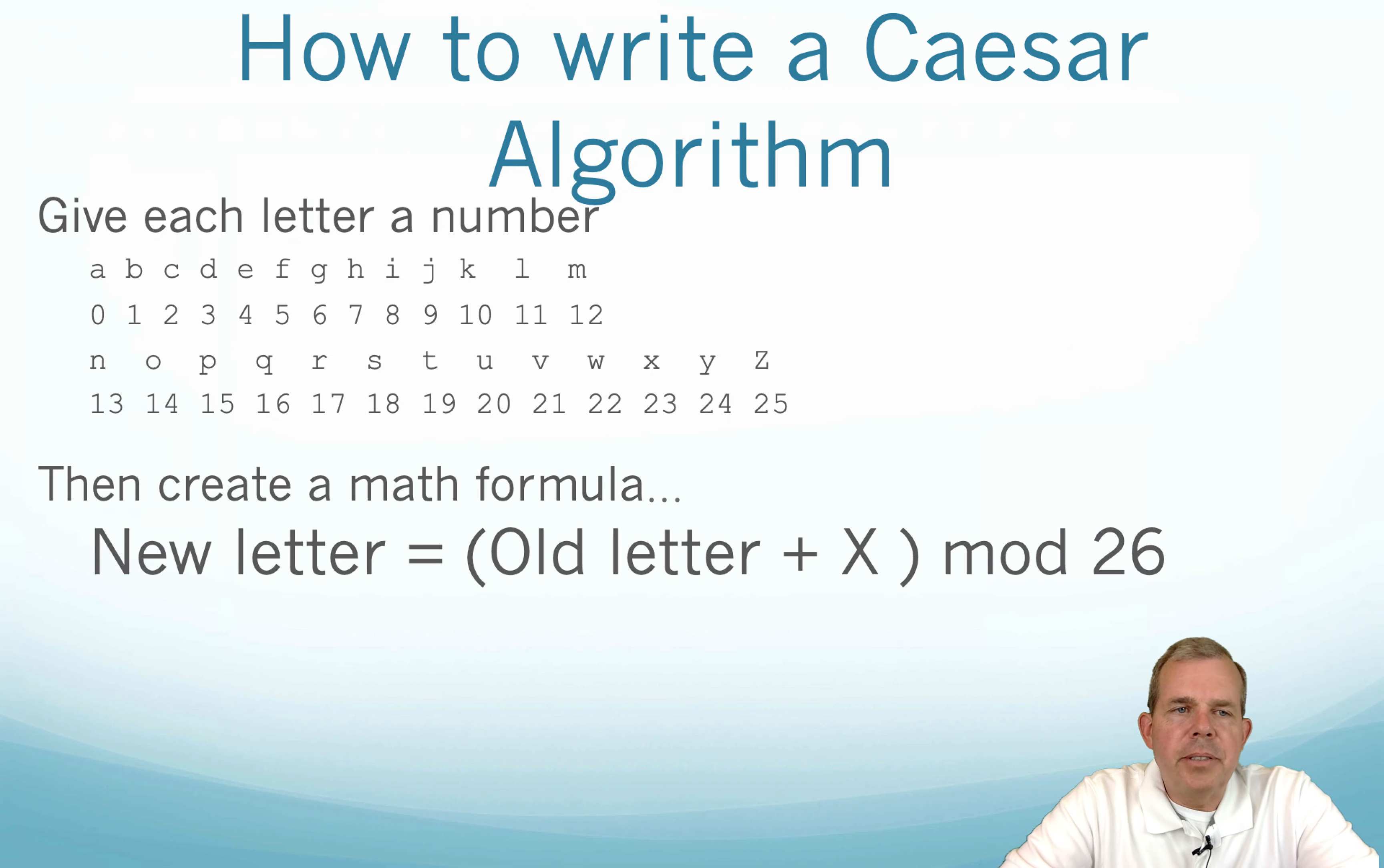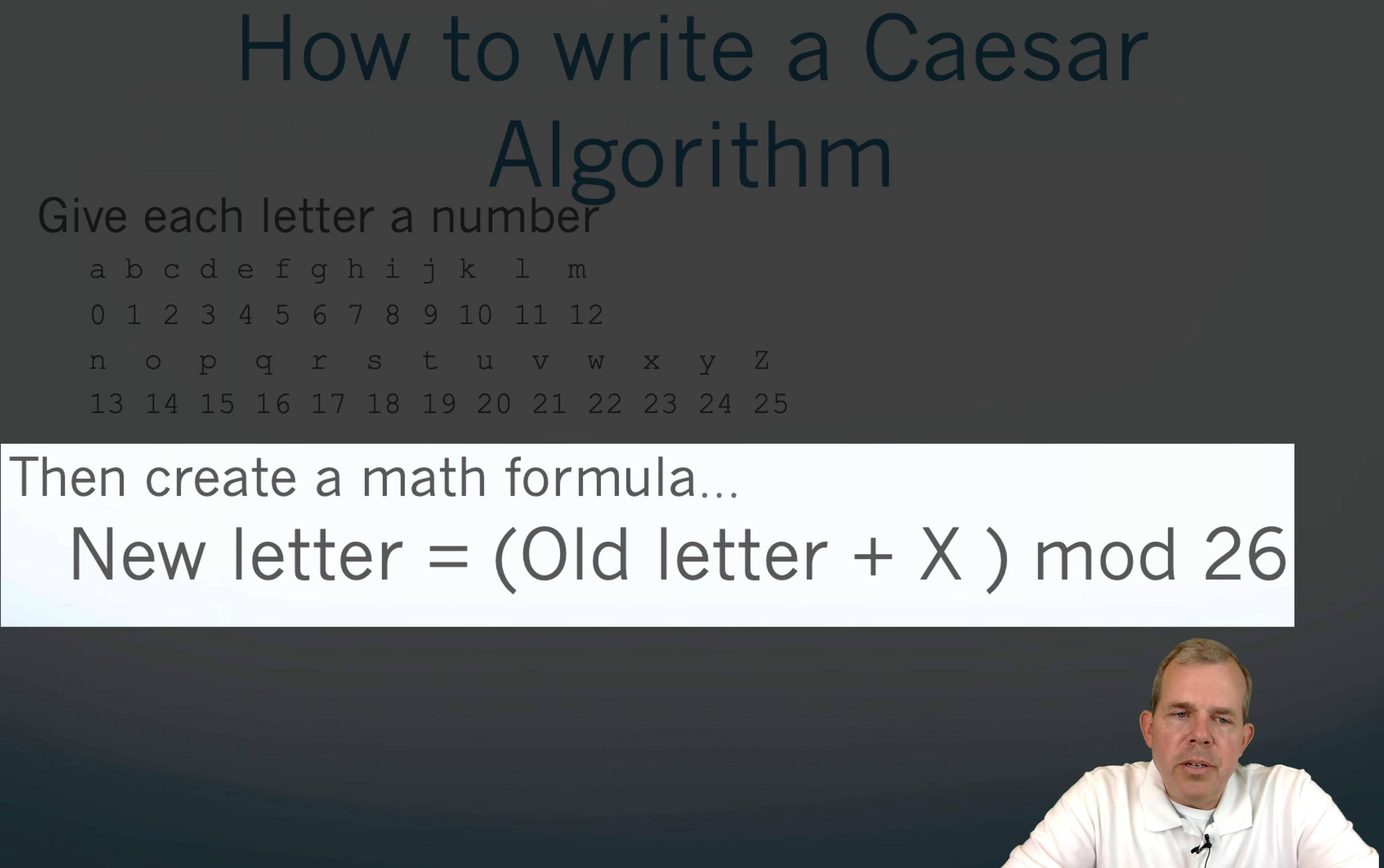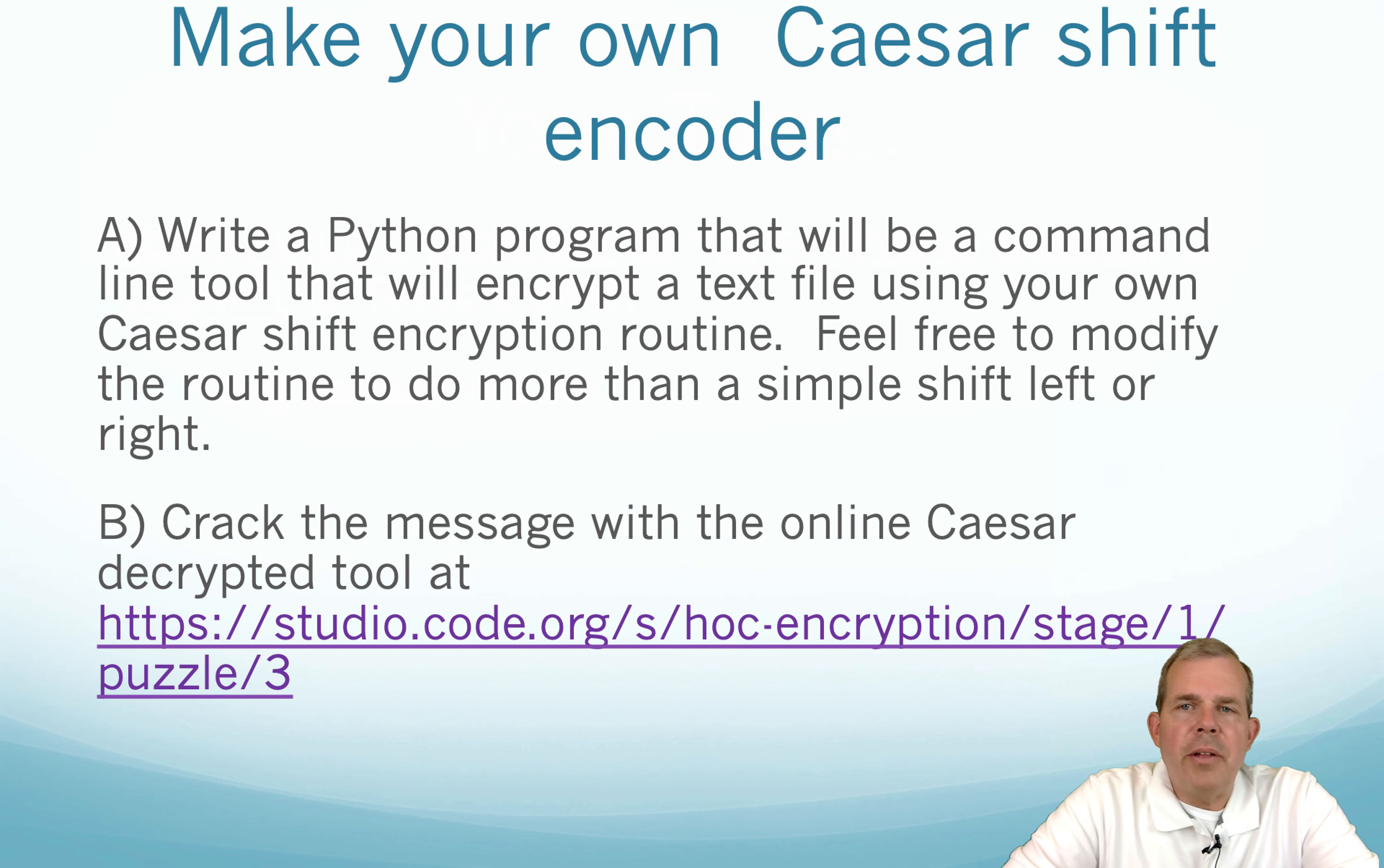So if I were to give you a programming assignment to create your own Caesar algorithm, you could do it something like this. You could give each letter a number, just assign it from 0 to 25. And then to come up with a new letter, you could use a formula called a mod operator. So a new letter equals the old letter plus some shift value, x. And then use mod 26. So you say, what is mod? Do you know what that means? Well Google it already and learn it and see what you can do with it. So mod is the remainder of a math problem.